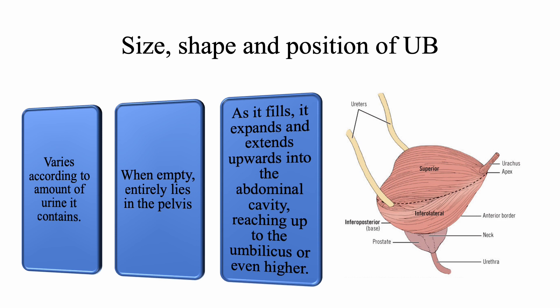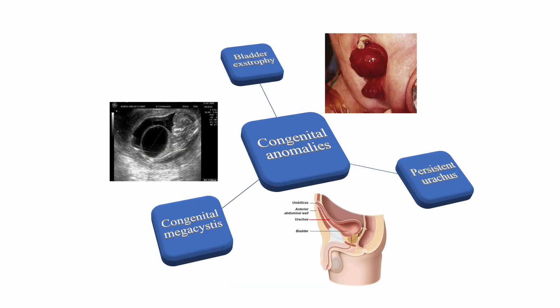Regarding the size, shape, and position of the urinary bladder: the size varies according to the amount of urine it contains. When the urinary bladder is empty, it lies entirely within the pelvis, but as it fills with urine it expands and extends upwards into the abdominal cavity, reaching up to the umbilical level or even higher.